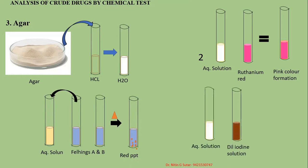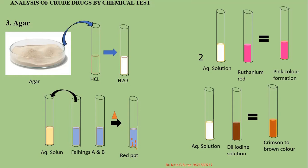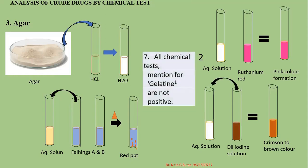The next test: the aqueous solution of agar is treated with dilute iodine solution. A crimson to brownish color is formed, because starch grains are absent. No blue color is formed, but due to other chemical components, crimson to brown color is formed in the case of agar. All the chemical tests which are positive for gelatin are not positive for agar — those tests are positive for gelatin but negative for agar.